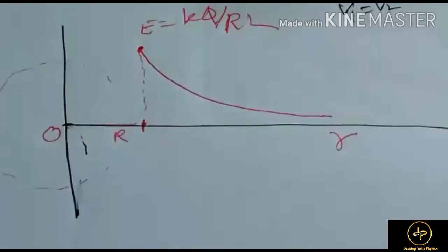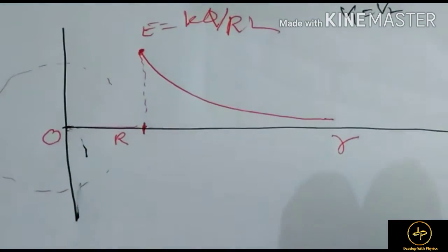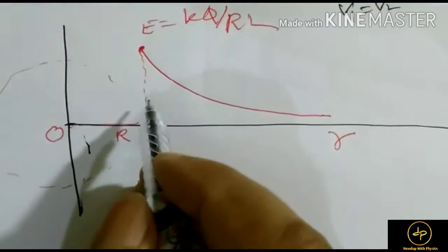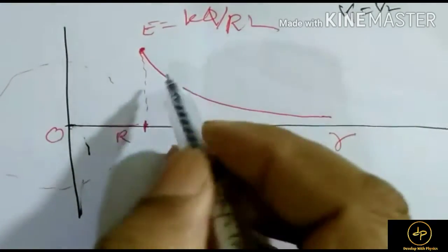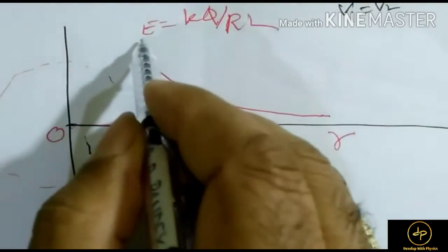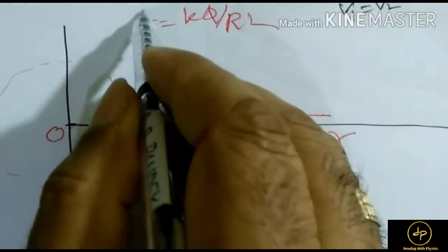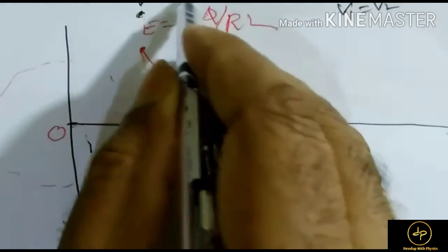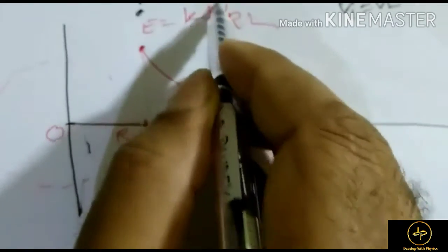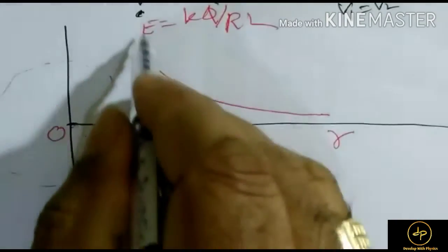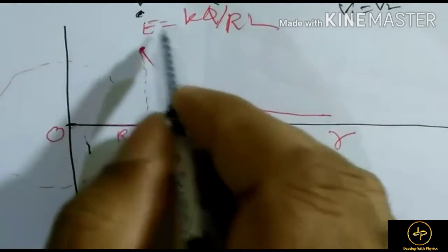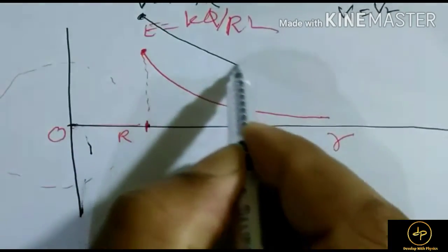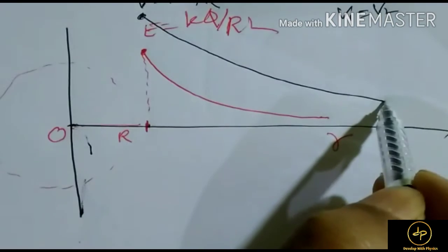If we draw the variation of potential, the potential at the surface is kQ/R at capital R. Then it decreases by 1/r, so this is a slow decrease. This variation is slow while the field variation is fast.